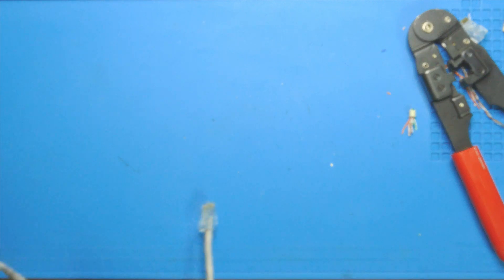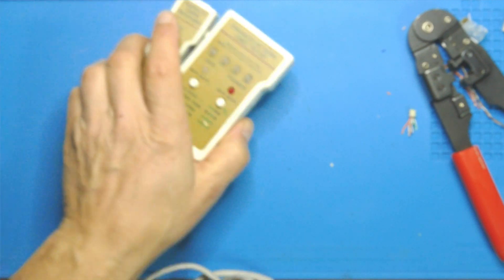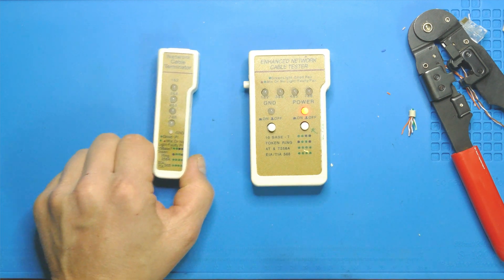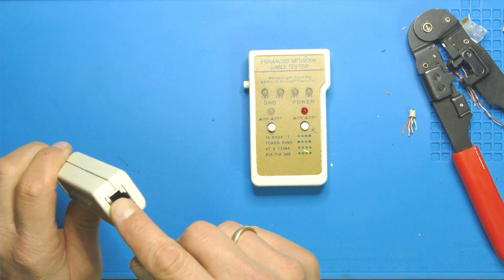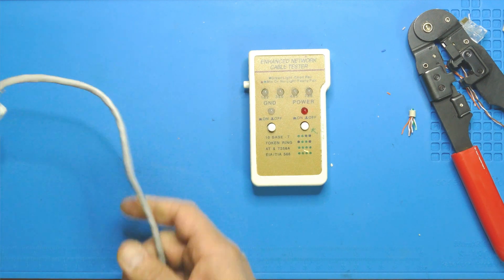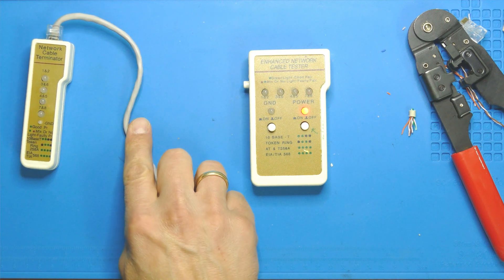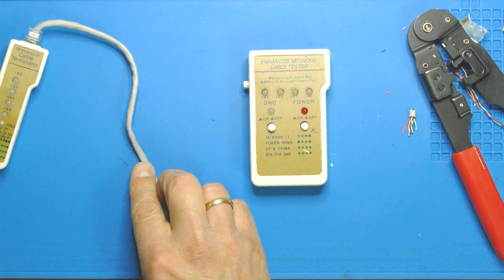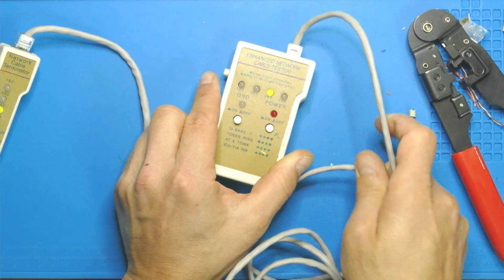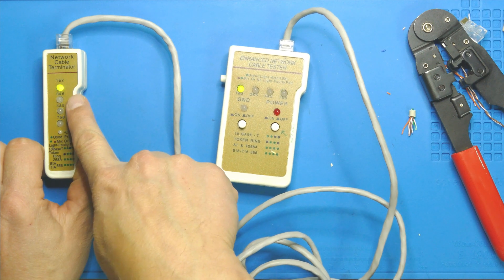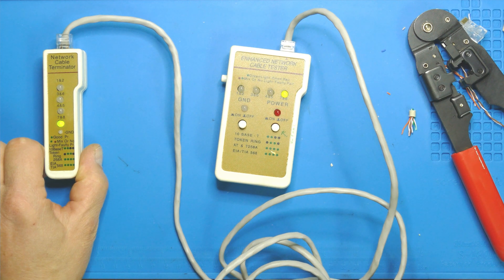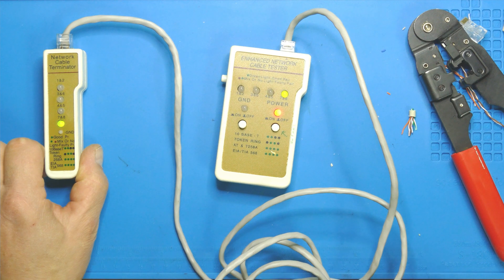So once we've done that, we can then check the connection with such a cable tester here. What you would do on one side of the connection, where your wall outlet is with a little patch cable, you would connect that part of the tester to the wall outlet. Let me just actually simulate that by putting the other end of the cable to the tester. And then the other end of the cable, which we've just crimped, we'll put it into that part of the tester, and then it will check all the pairs, one pair after the other: one and two, three and six, four and five, seven and eight, and indicate with a green LED that the connection is made in the right way. That's it.